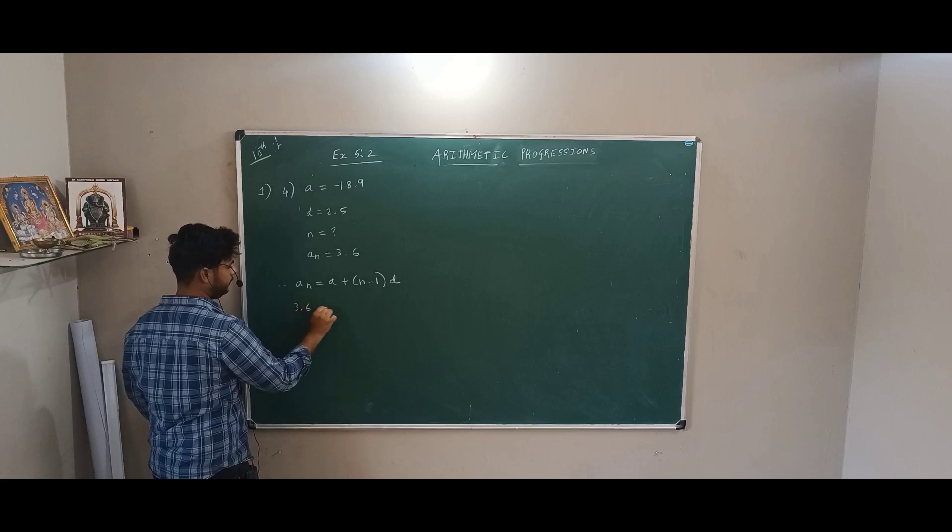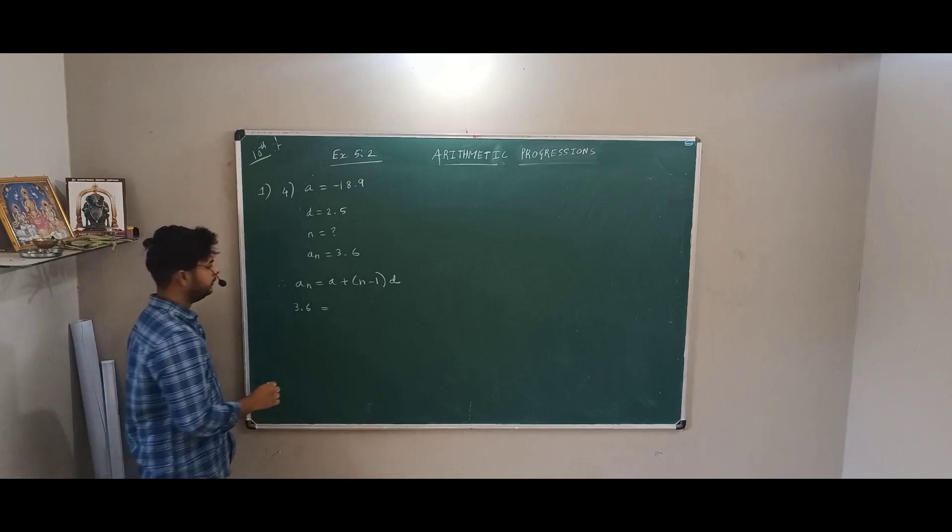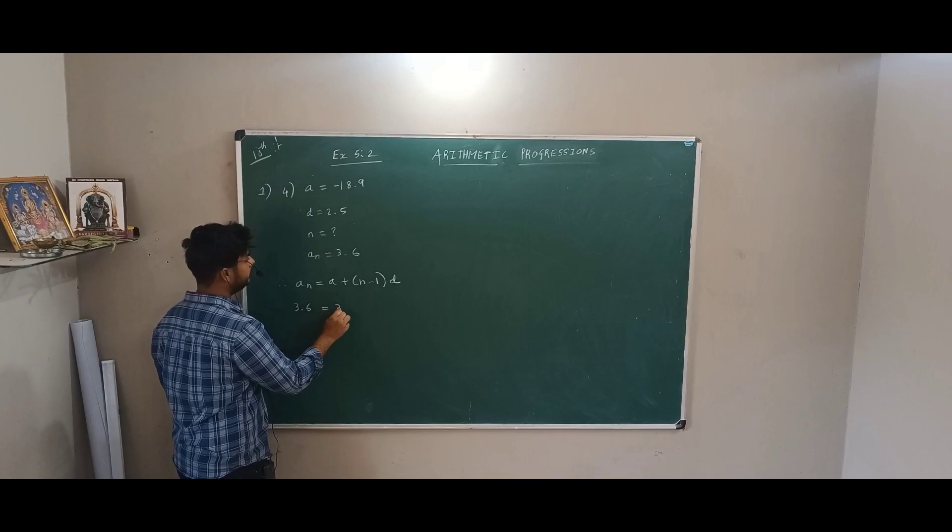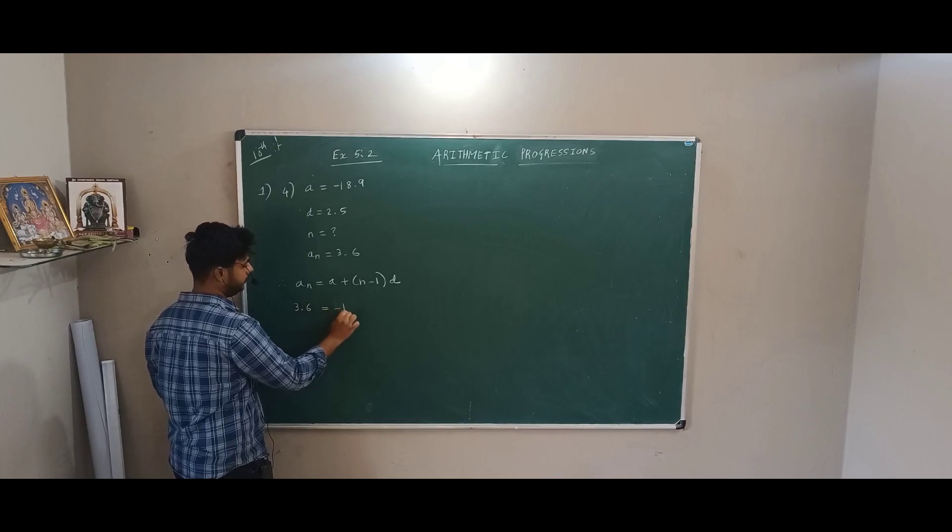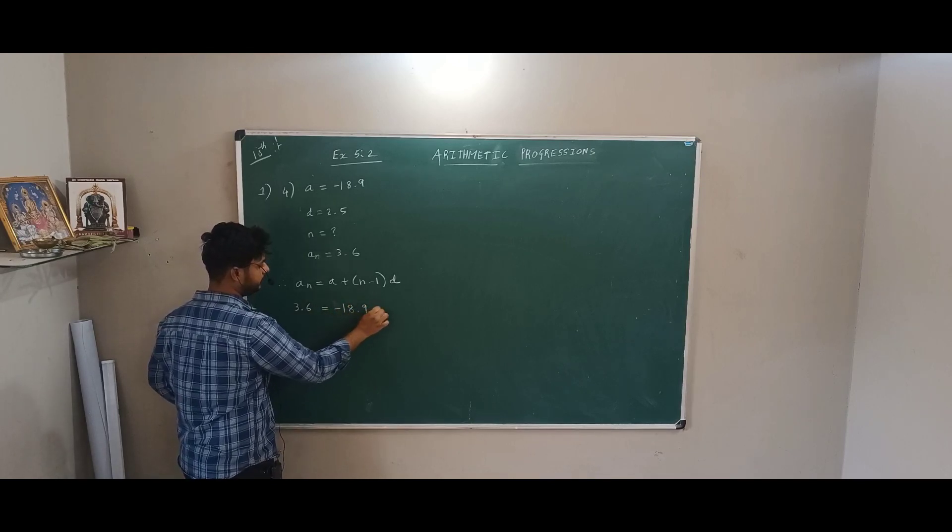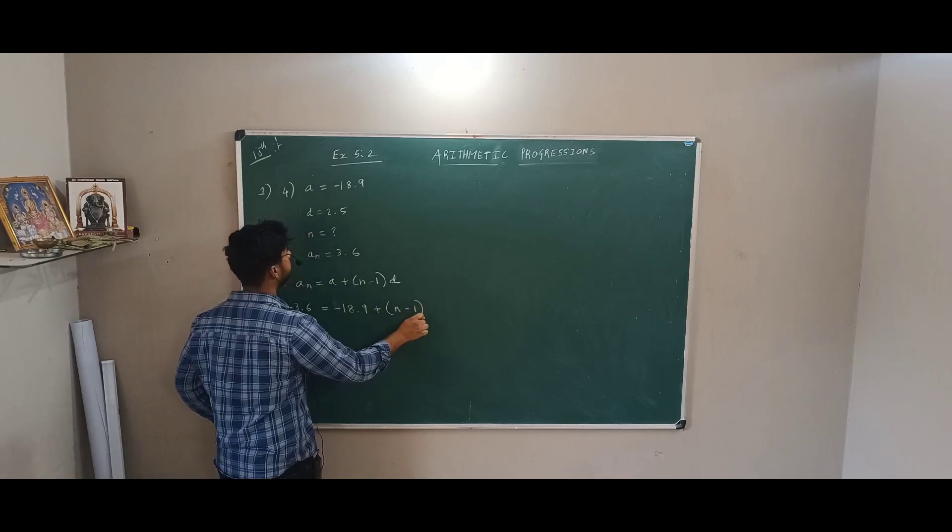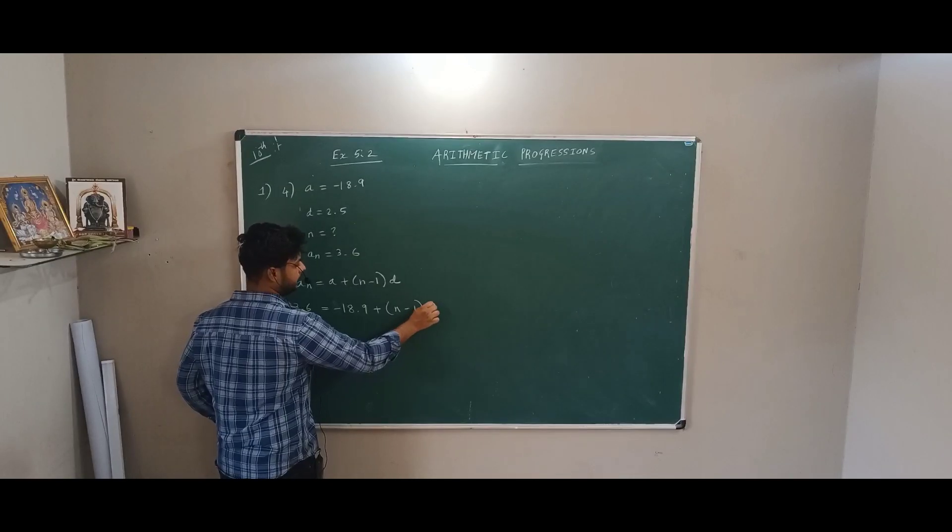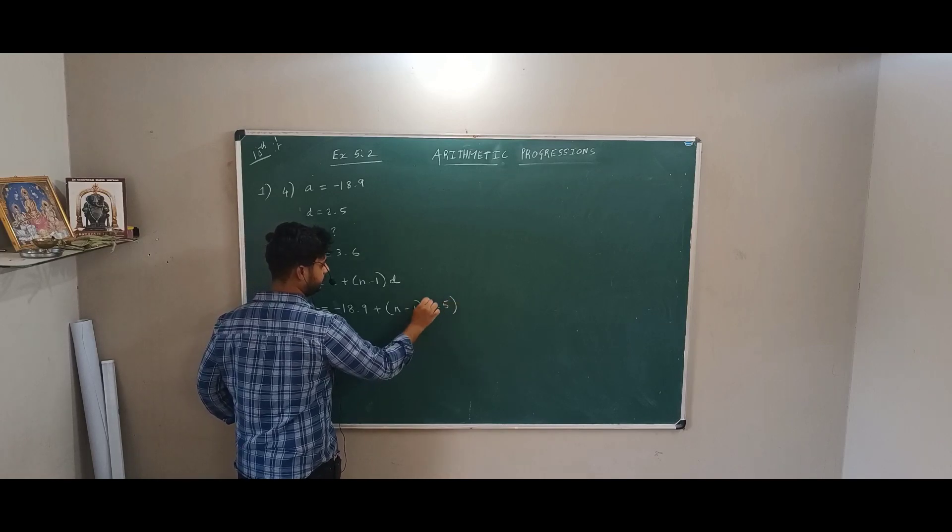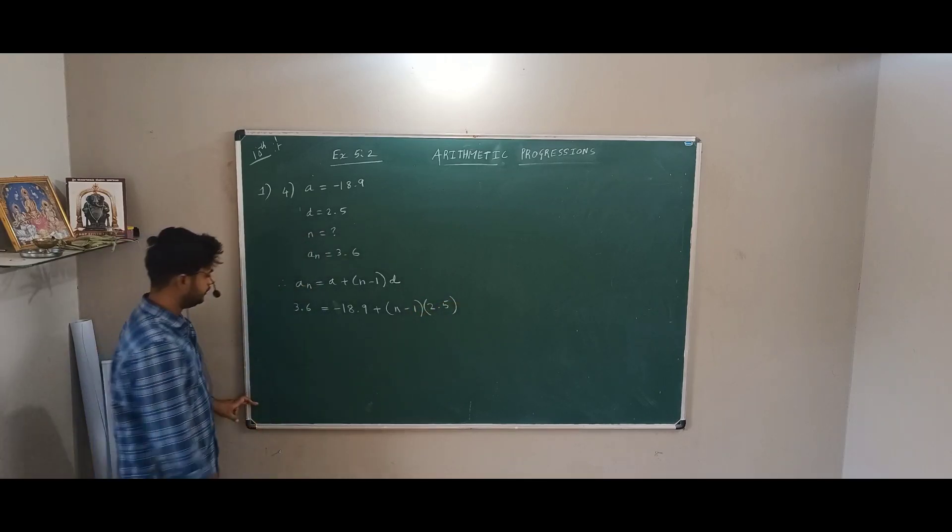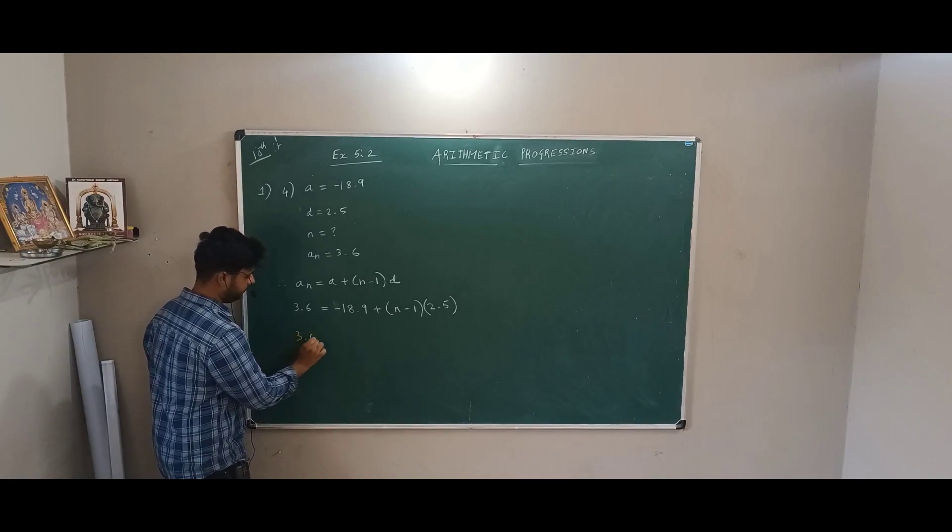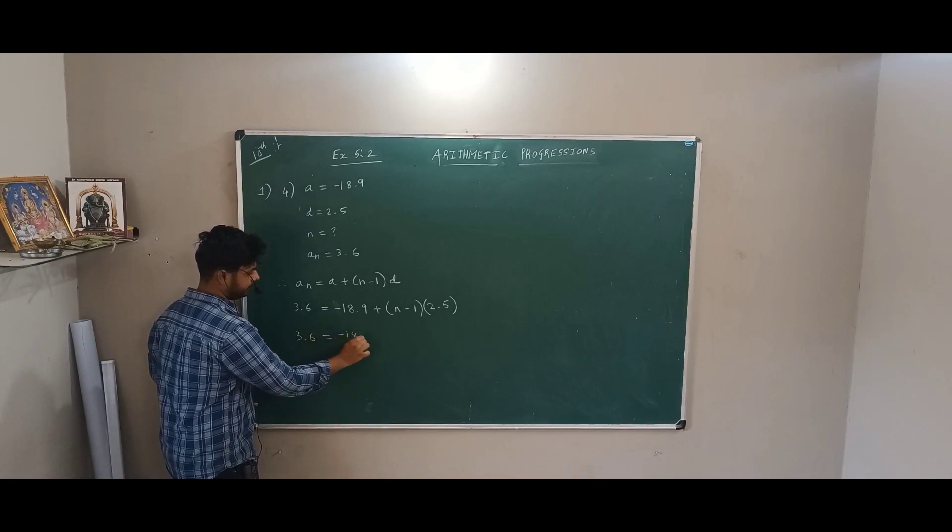3.6. A is equal to minus 18.9 plus N, I don't know, so N I will keep as it is, N minus 1. What is my D? 2.5. Correct? 3.6 as it is, minus 18.9 as it is.